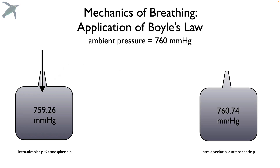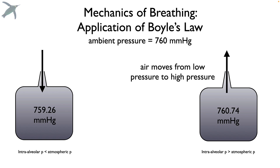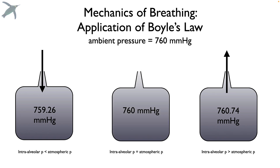The other option is that the pressure is greater in the lungs than in the environment you're breathing — in that case, air will flow out again from areas of high pressure to areas of low pressure until equilibrium is reached. The third option is that the pressures are the same: that is equilibrium, so no air will move.